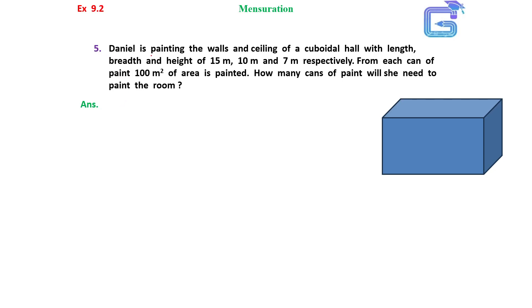Question number 5: Daniel is painting the walls and ceiling of a cuboidal hall with length, breadth and height 15 meters, 10 meters and 7 meters respectively.